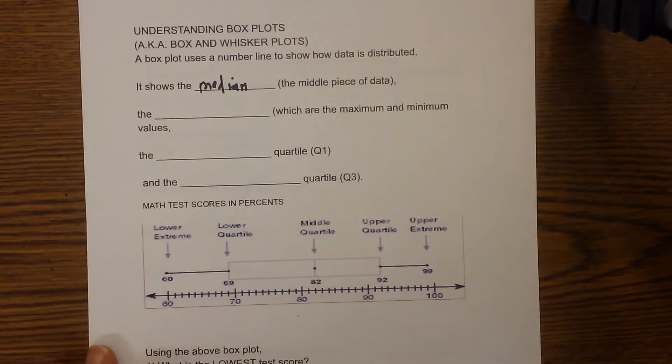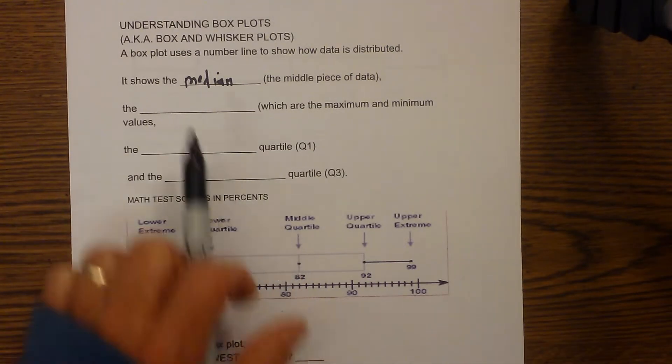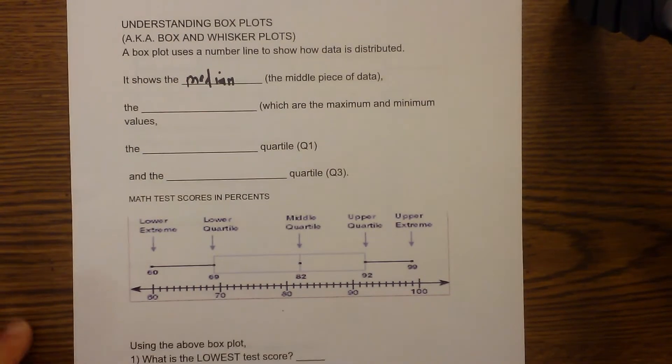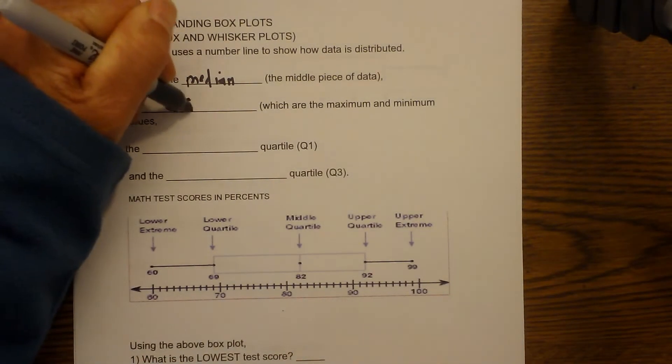Okay, let's first look at what information it tells you. The middle quartile is the median or the middle piece of data. Next, it shows you the two extremes. You have the lower extreme here and the upper extreme there. So we'll put extremes here.